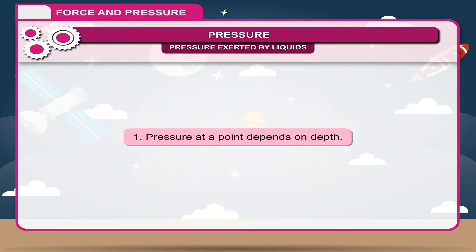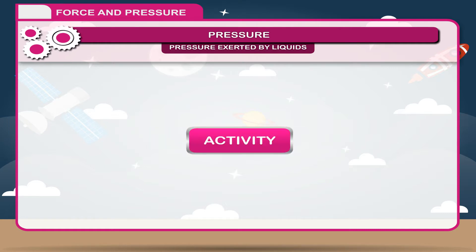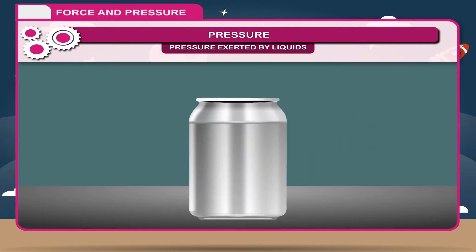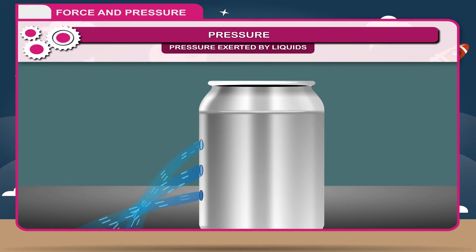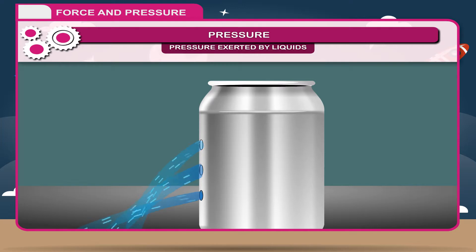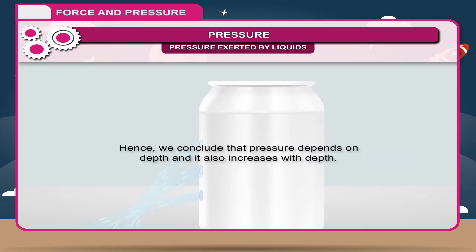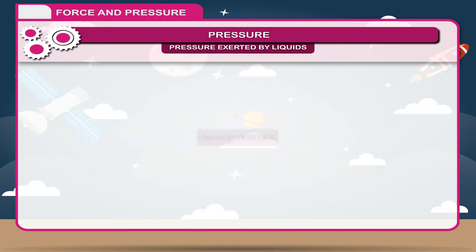1. Pressure at a point depends on depth. Activity: Take a container made of tin. Drill small holes at 3 various heights of the container, one below the other. Put water in the container and open the holes. You will observe that water rushing out from the lowest hole goes farthest, and water falling from the highest hole falls at the nearest distance. This indicates that pressure of water near the base of the container is maximum. Hence, we conclude that pressure depends on depth and increases with depth.